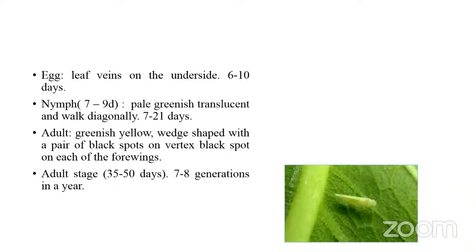The female inserts eggs into leaf veins on the underside of leaves. Eggs hatch in six to ten days. The nymphal period lasts seven to nine days. Nymphs are pale greenish, almost translucent, and walk diagonally — a peculiar character of the Cicadellidae family. The nymphal stage lasts seven to 21 days. Adults emerge as greenish yellow, wedge-shaped insects with a pair of black spots on the vertex and a black spot on each forewing. The adult stage lasts 35 to 50 days, with seven to eight generations per year.